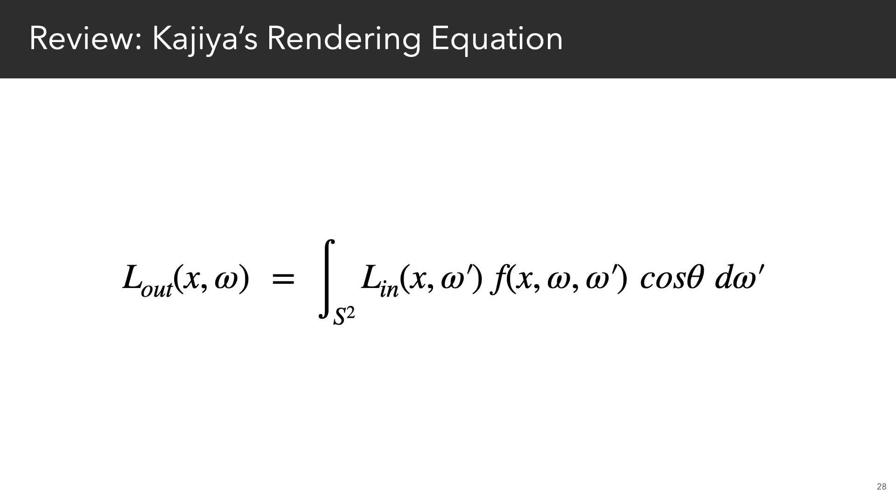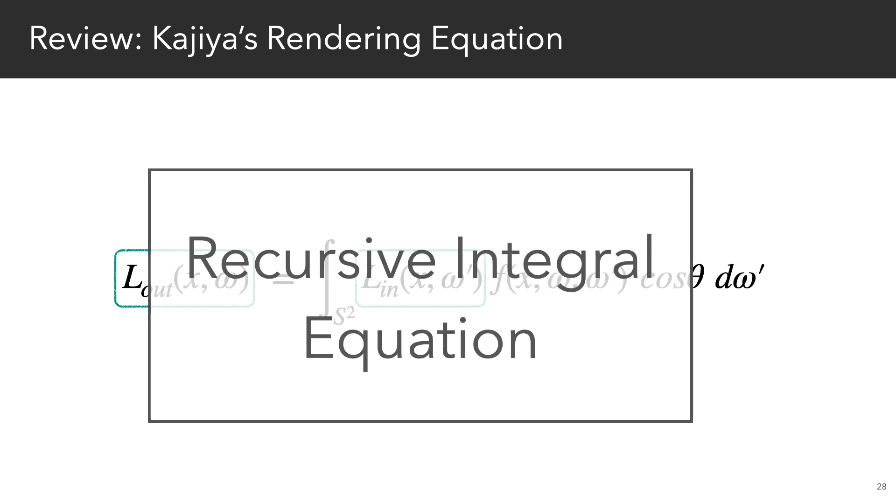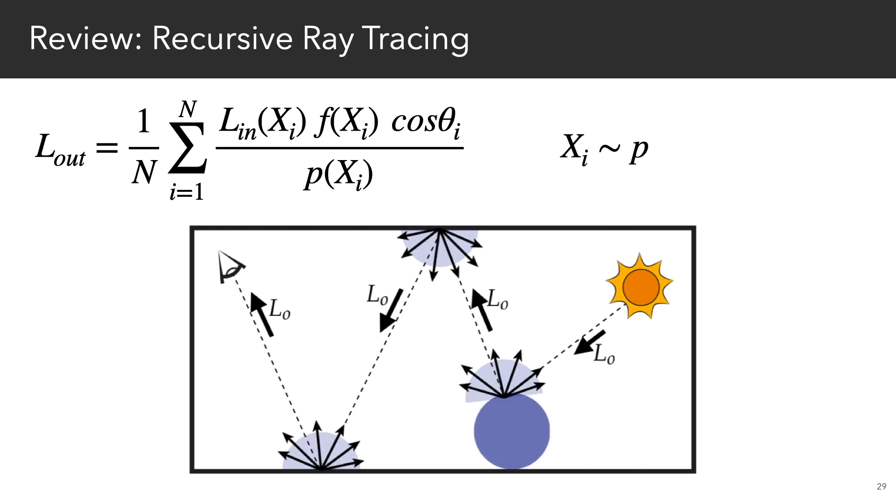So as a reminder, the rendering equation gives the unknown radiance on the left, in terms of the unknown radiance inside the integral on the right, which makes this a recursive integral equation. This equation can likewise be estimated with a recursive Monte Carlo procedure. And in fact, this is exactly what we'll do for the PDEs we want to solve.